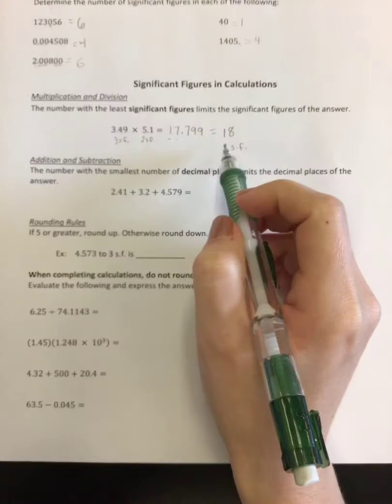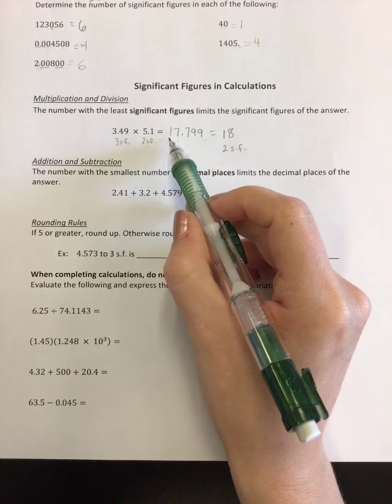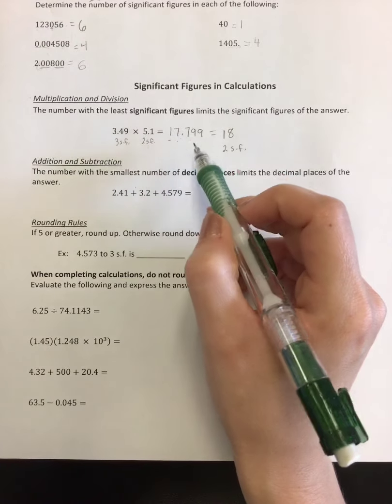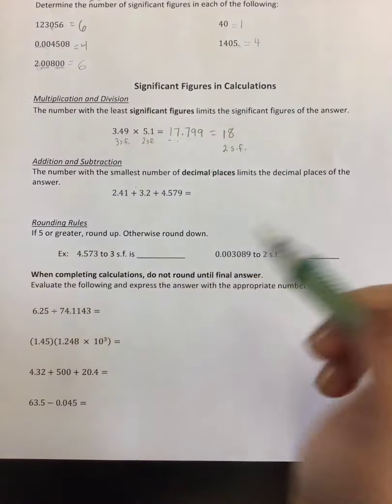So some people have trouble with rounding. My advice is to just start from left to right. And when you get to the last digit that you're allowed to have, look one past it and think, do I round up or stay the same.